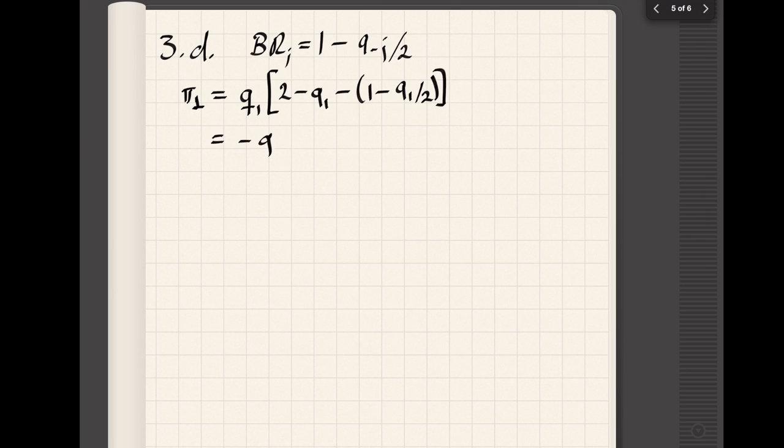Finally, for Stackelberg competition, the best response is going to tell us directly what the follower is going to do, choosing a best response to what the leader does. So we have to plug in that best response in terms of q₂ in the profit function of the leader. Let's do that. We get a quadratic equation as usual. Taking first order conditions, it's going to tell us what the quantity of the leader is, in this case one.